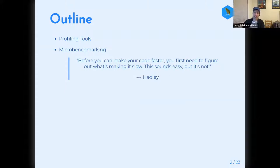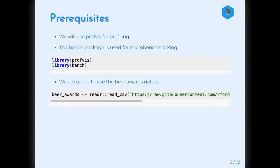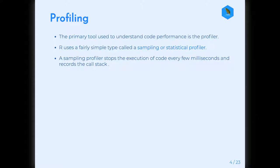My code where it's slow, it hangs and I can tell it's slow. But it's good to be able to actually put numbers to this stuff, which you can't do unless you're really using profiling. We're going to be using profviz to visualize your profiling, and the bench package for micro benchmarking. We're going to use the beer awards dataset — I thought I would try and use some beer-related content to make this fun. This might be the first actual appearance of that dataset.